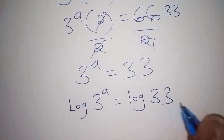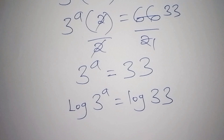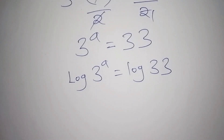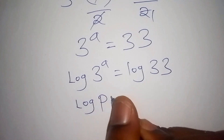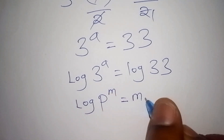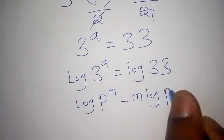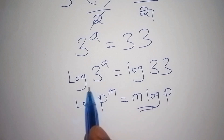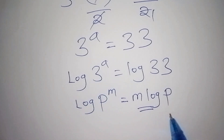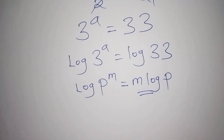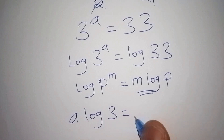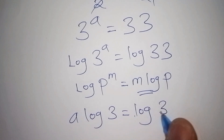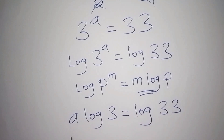We now have: log(3^a) = log(33). Recalling the log power rule — log(p^m) = m·log(p) — we can rewrite the left side. So we now have: a·log3 = log33.